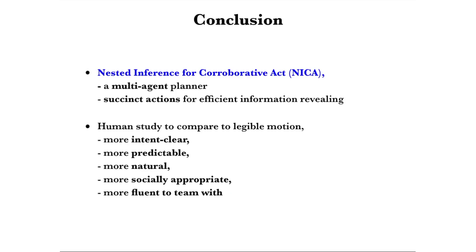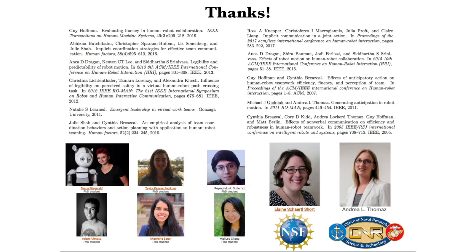In summary, we proposed Nested Inference for Cooperative Act, NICA — a multi-agent planner that measures information value to teammates and generates succinct actions for efficient information revealing teamwork. We compared empirically to legible motion in a guidance task and showed that NICA is perceived to be more intent-clear, predictable, natural, socially appropriate, and fluent to team with. Here are the references shown in the slides. Thank you, and I'd like to thank my lab mates and collaborators. This work was funded by the National Science Foundation.